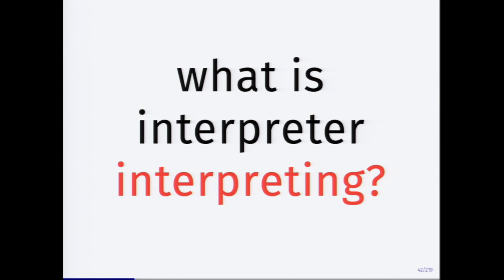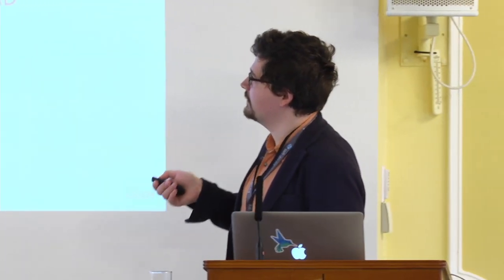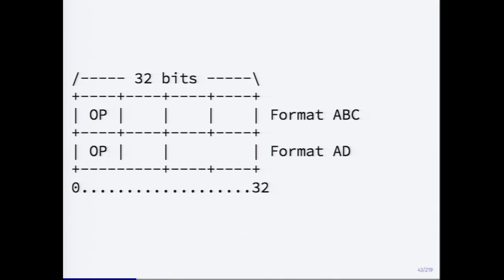Let's talk about what the interpreter is interpreting. The interpreter has a very simple instruction format: it's 32 bits per instruction. There is a lower 8-bit opcode, and then you either have three 8-bit operands or one 8-bit operand and one 16-bit operand. Very uniform, very easy to iterate over the instruction stream.